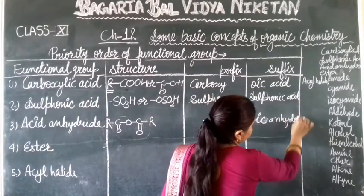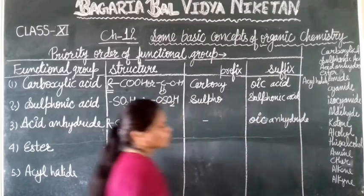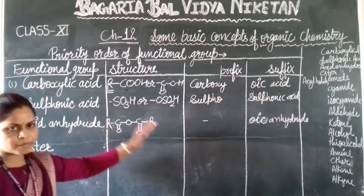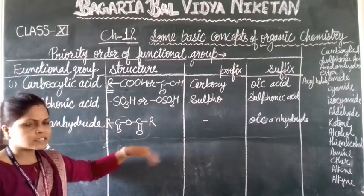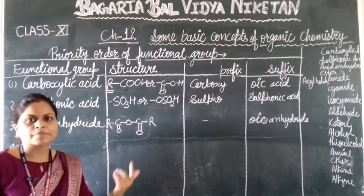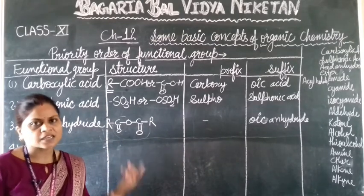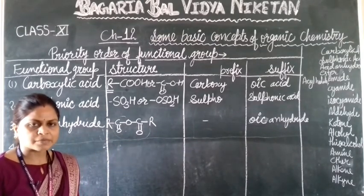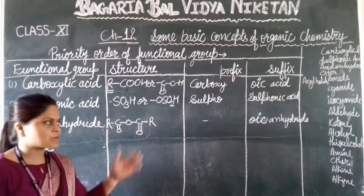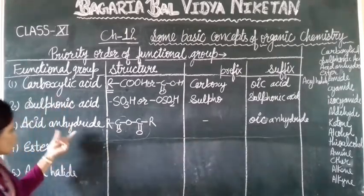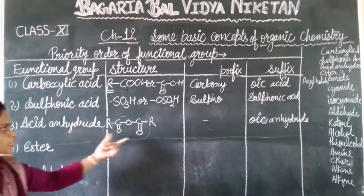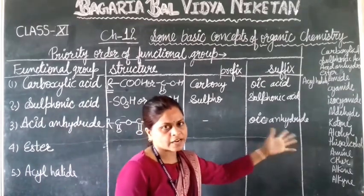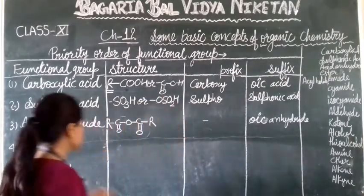We will take examples in our next videos, so don't worry. Just remember this table and we will practice. Acid anhydride does not use a prefix; the suffix is 'oic anhydride'.